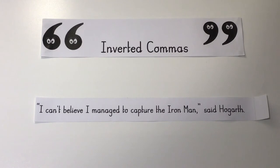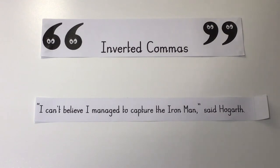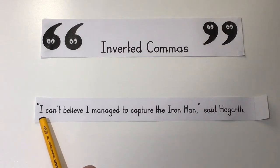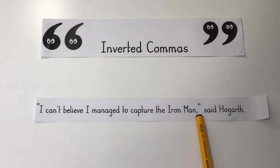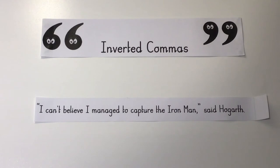Let's have a look at an example of direct speech with inverted commas: "I can't believe I managed to capture the iron man," said Hogarth. Which part of this sentence has been spoken? We can see that it's this part of the sentence which has been spoken, so we need to make sure that is where we put our inverted commas.